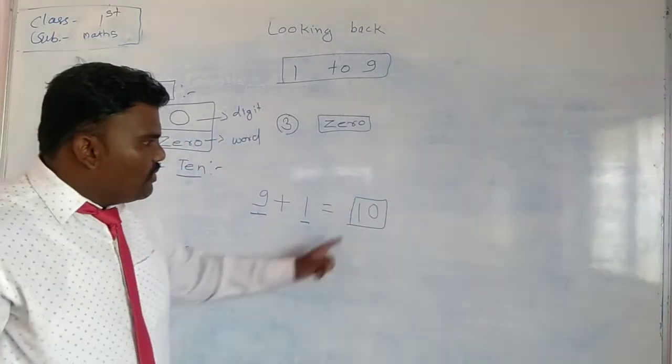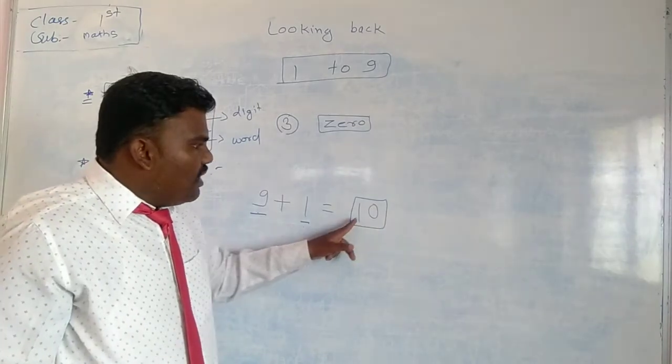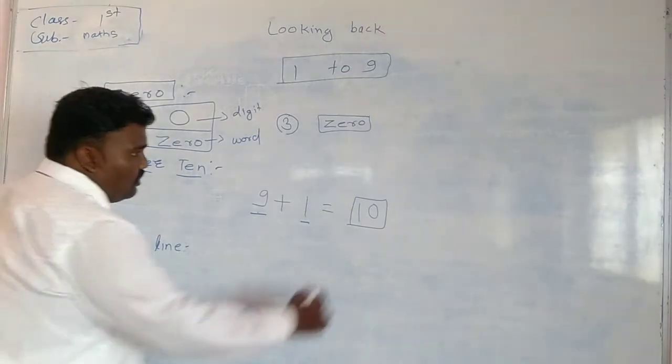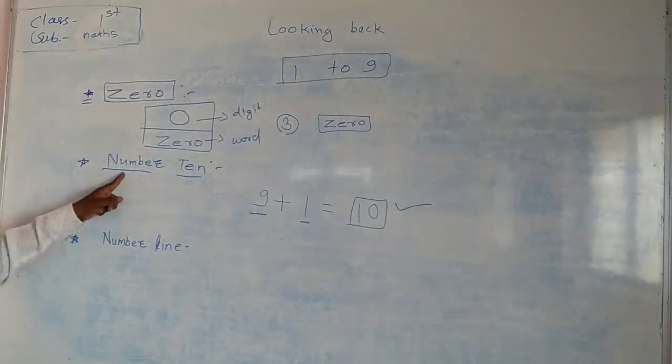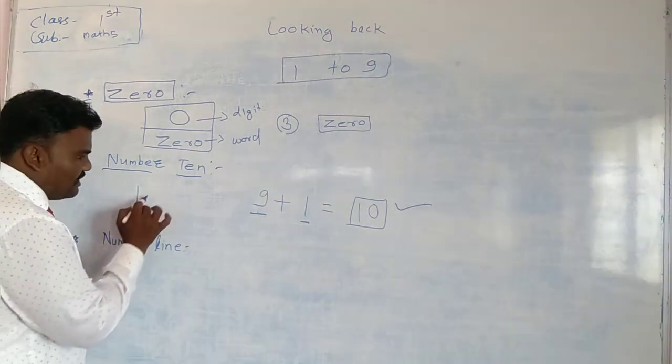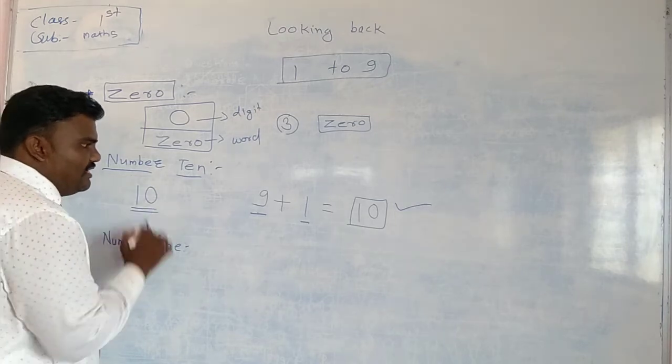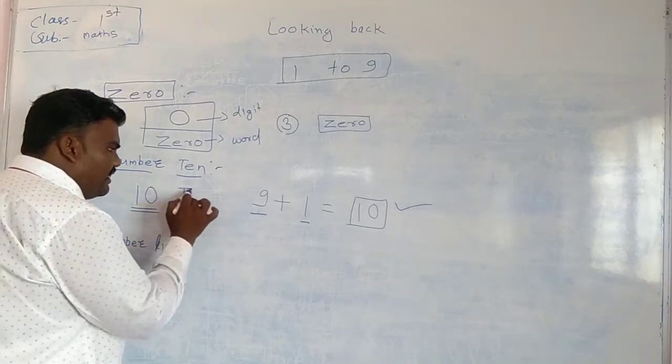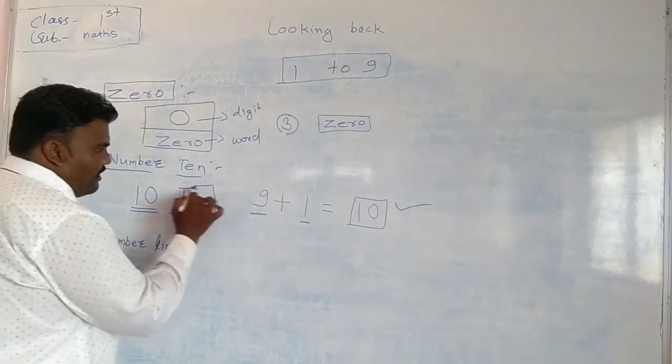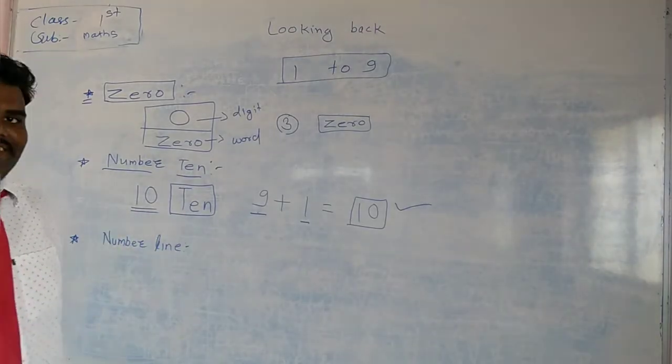So how to write a 10? 1 and then 0. 1 and 0 will be 10. This is nothing but a 10. How to write a 10? Like this. This is 10. And how to write it in word? T, E, N. Ten. Can you write it? Yes, you can.